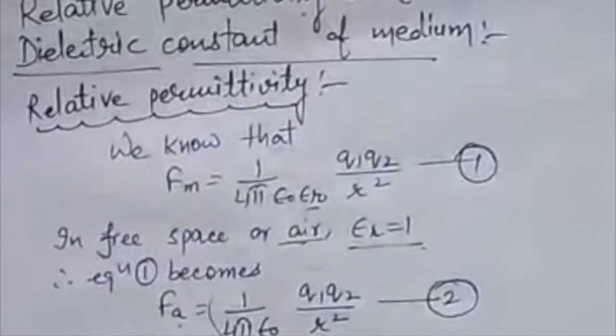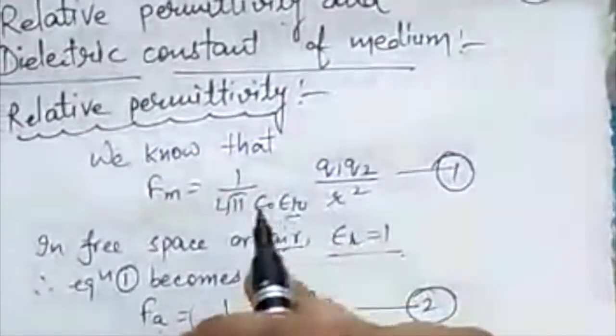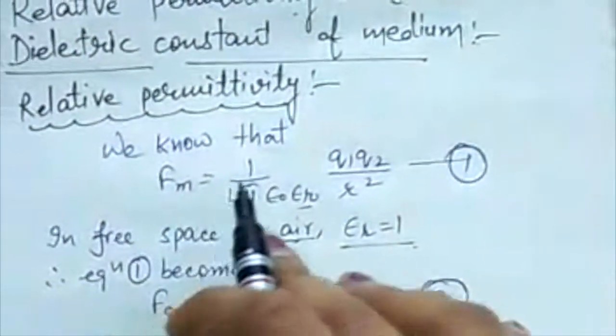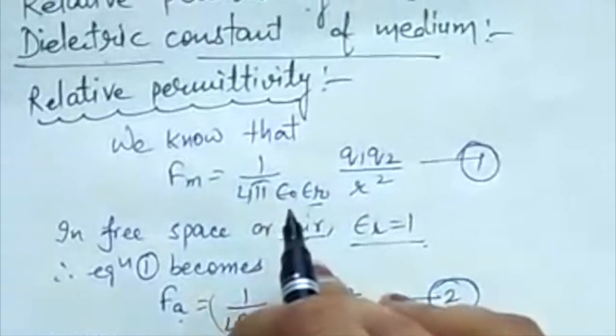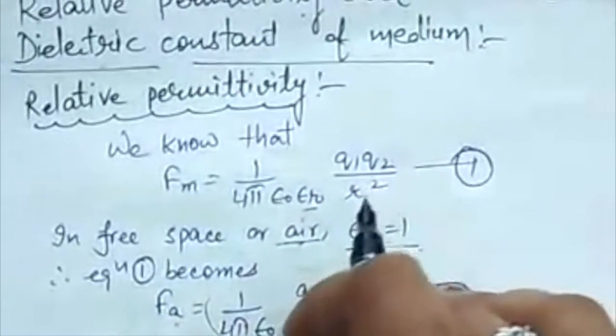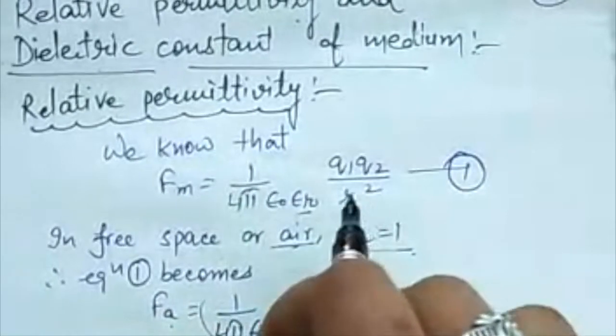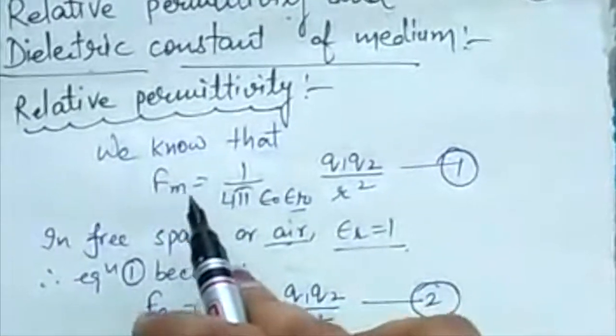We know that Fm is equal to 1 upon 4 pi epsilon r epsilon 0 q1 q2 upon r square. So we have done this equation that Fm is the Coulomb's force in case of medium. This is equation number one.